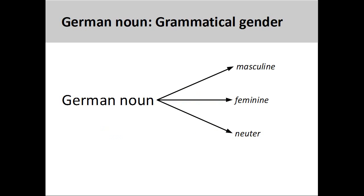Unlike an English noun, a German noun has a grammatical gender. It can be either masculine, feminine, or neuter. The grammatical gender can be related to the biological gender of the noun, if it has one, but usually there is no connection.